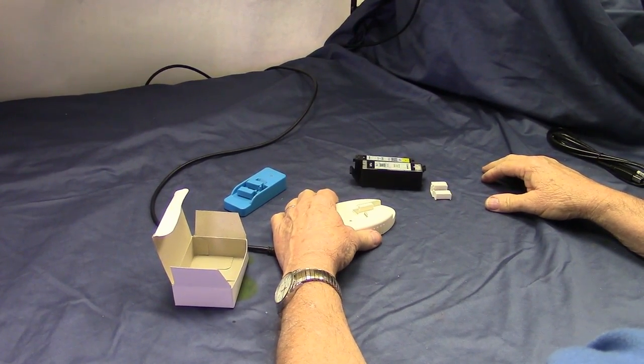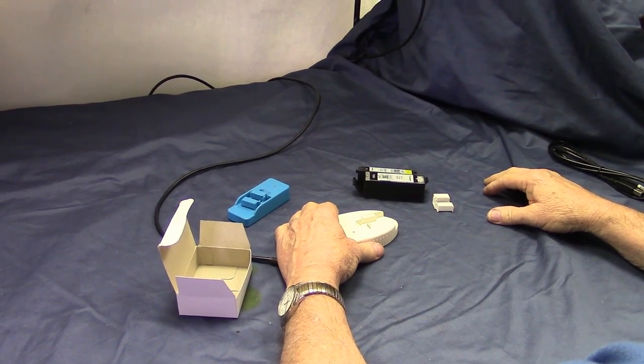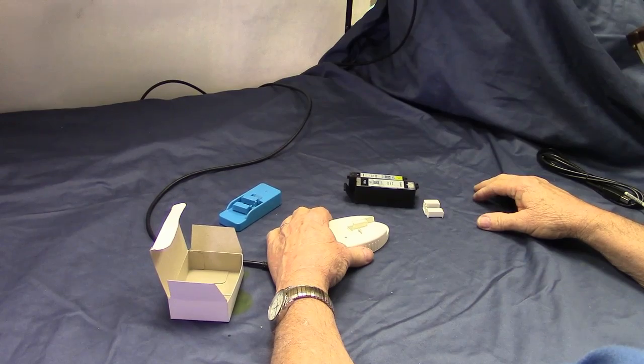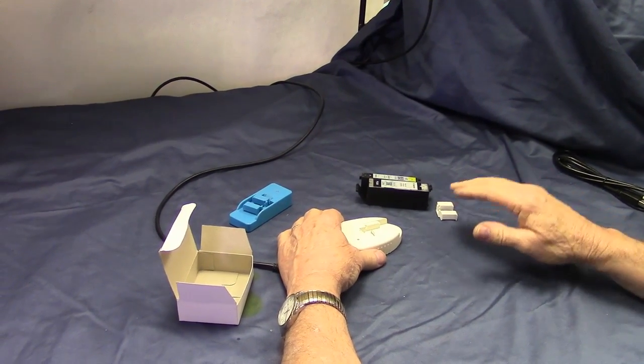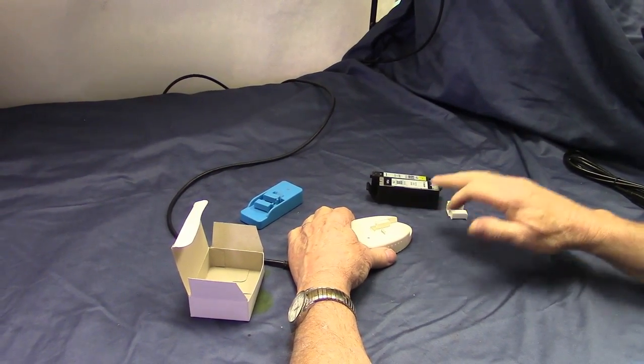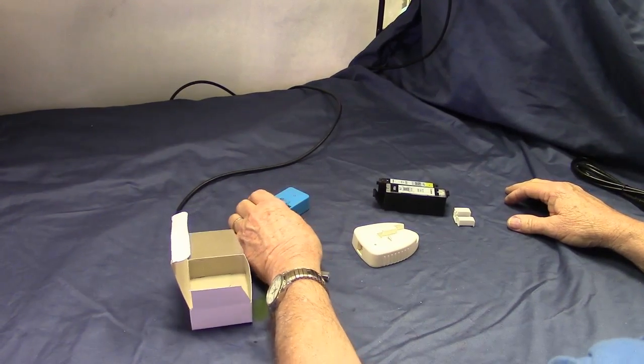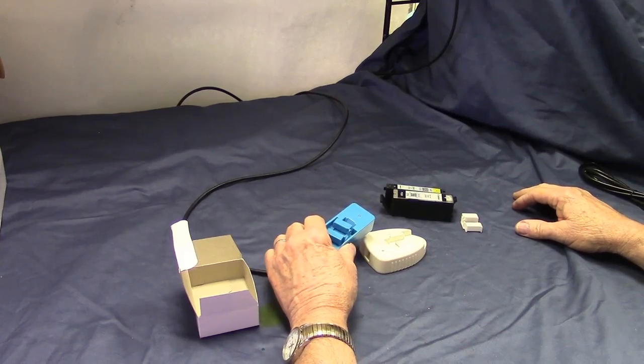Now Ink Products has just released its newest chip resetter for the Canon 270 and 271 cartridges. This will do a total of 20 cartridge sets of resets, which is a total of 100 resets. Some of the older blue models or ones that some people sell only do 70. This will do 100.